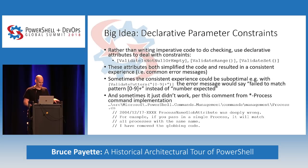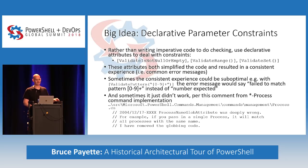Declarative parameter constraints: rather than writing imperative code to do all the checking, we have attributes to deal with that. These attributes reduced the amount of code you had to write, reduced the number of error messages you had to write and internationalize, and reduced the number of error messages the user had to learn — a win-win-win situation, except when it didn't work. You can get into suboptimal situations like the regular expression validate pattern, which tells you the regex that was tested rather than saying 'your phone number is invalid.'